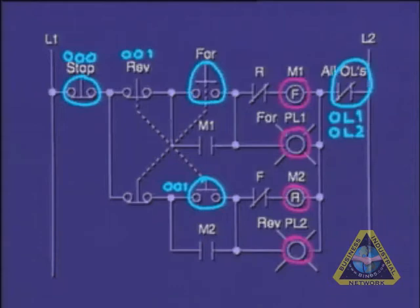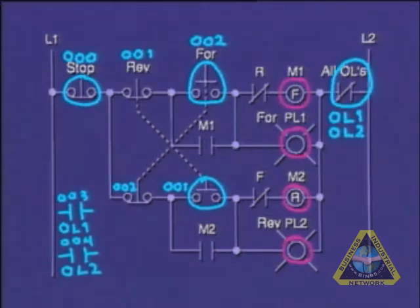And address 002 to the forward push button. For the overload, we'll assign address 003 to the forward motor 1 overload and 004 to the reverse motor 2 overload.